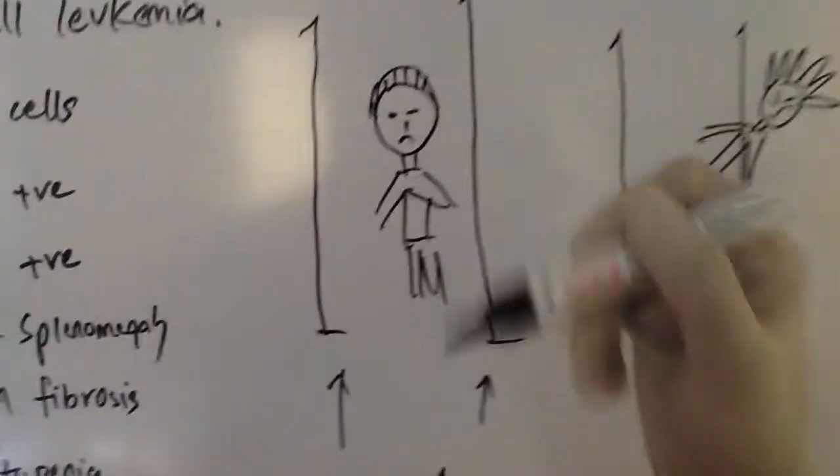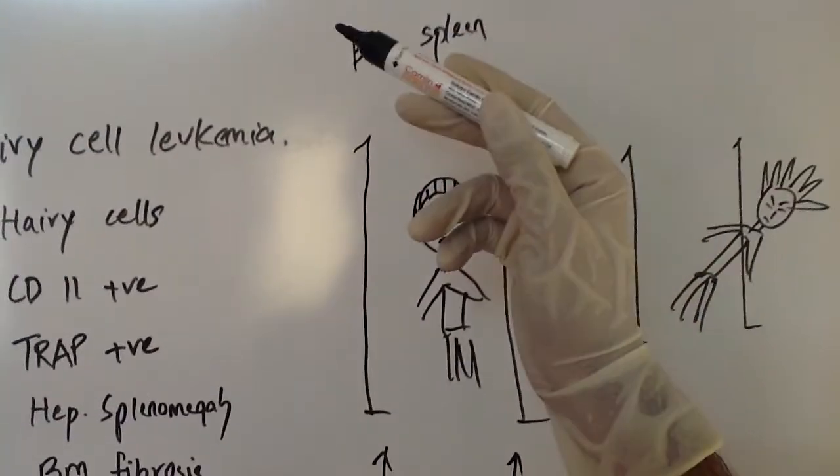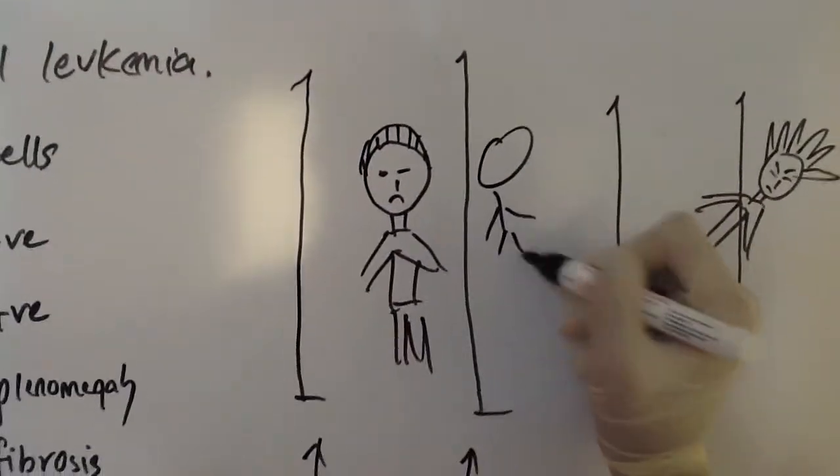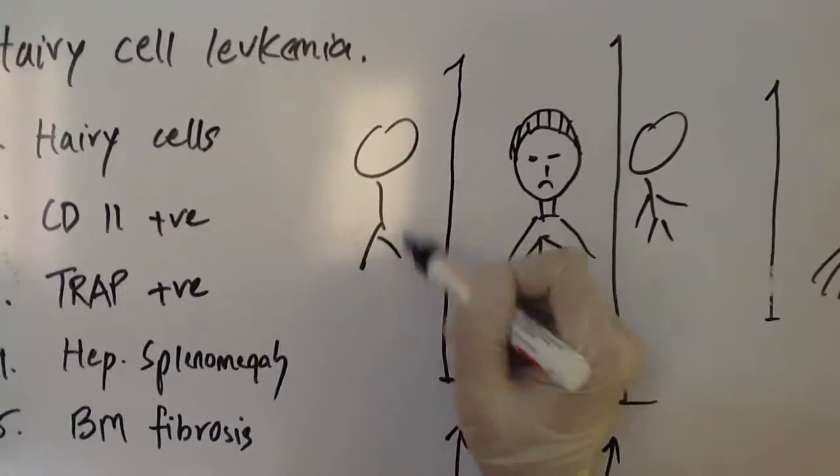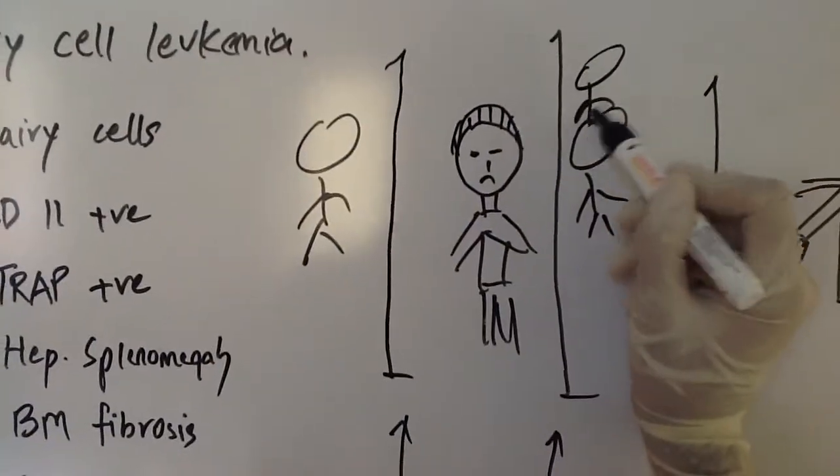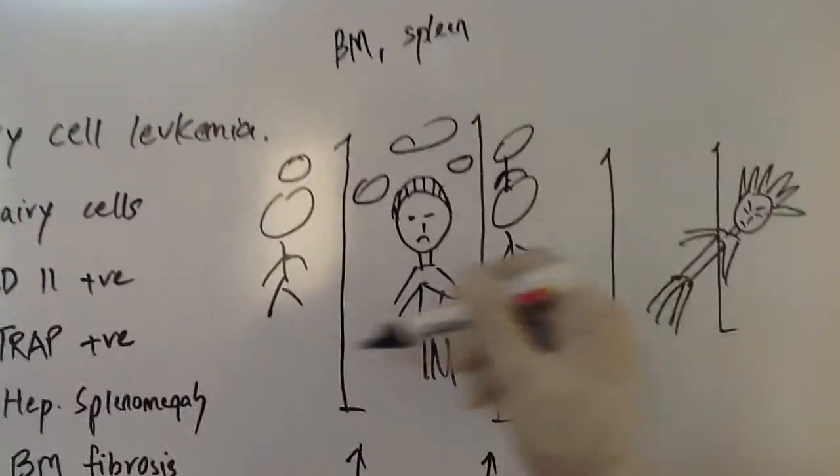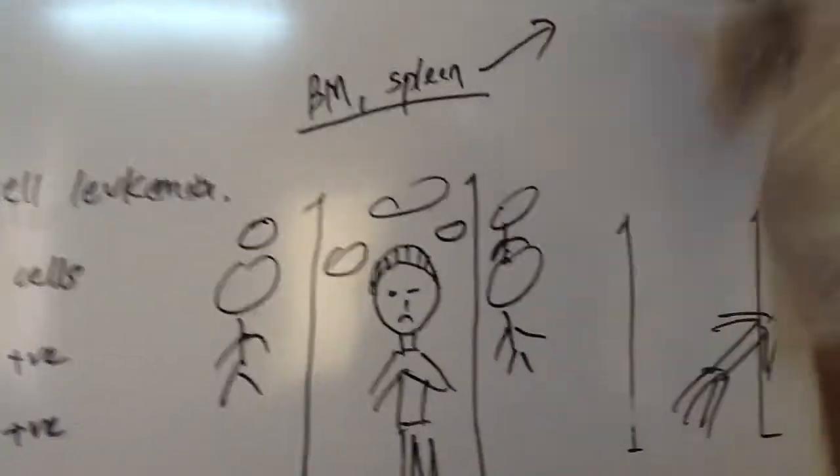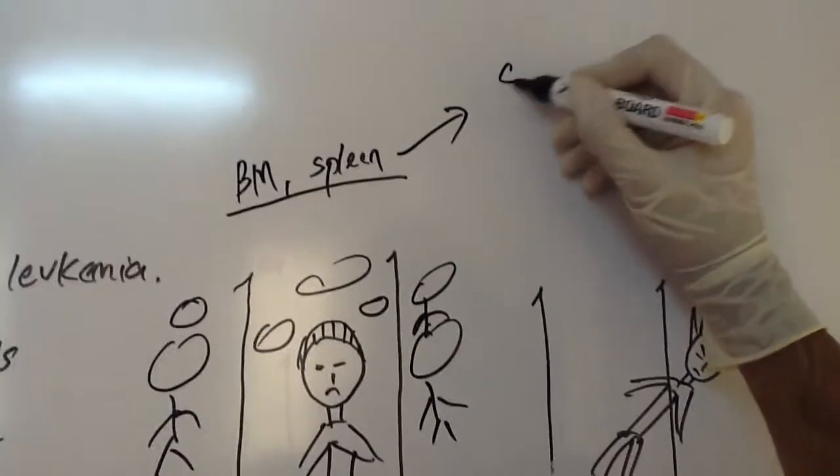And imagine now that this is not the only lymphocyte which is trapped inside the bone marrow and the spleen. There are lots of others like him, imprisoned. Lots of them inside the bone marrow and the spleen. So there is a lot of overcrowding inside the bone marrow and the spleen, and naturally there's going to be splenomegaly.